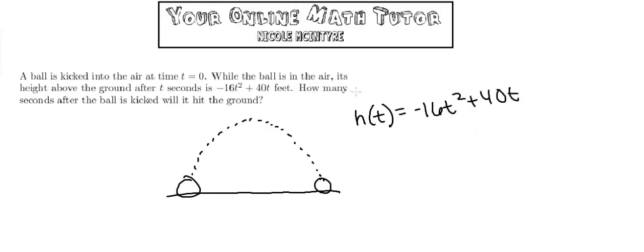It wants to know how many seconds after the ball is kicked will it hit the ground. When it hits the ground, its height h(t) is equal to 0.